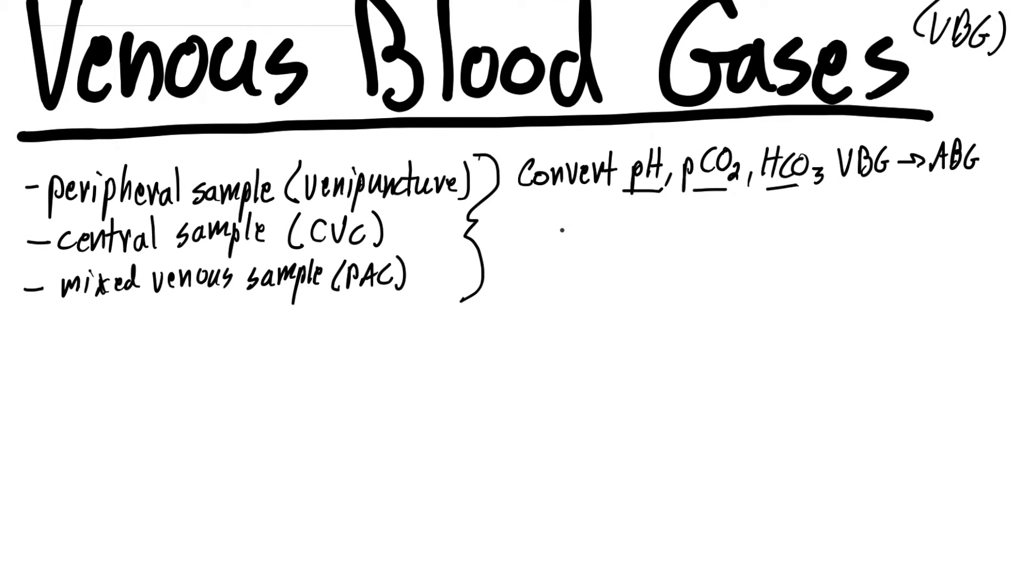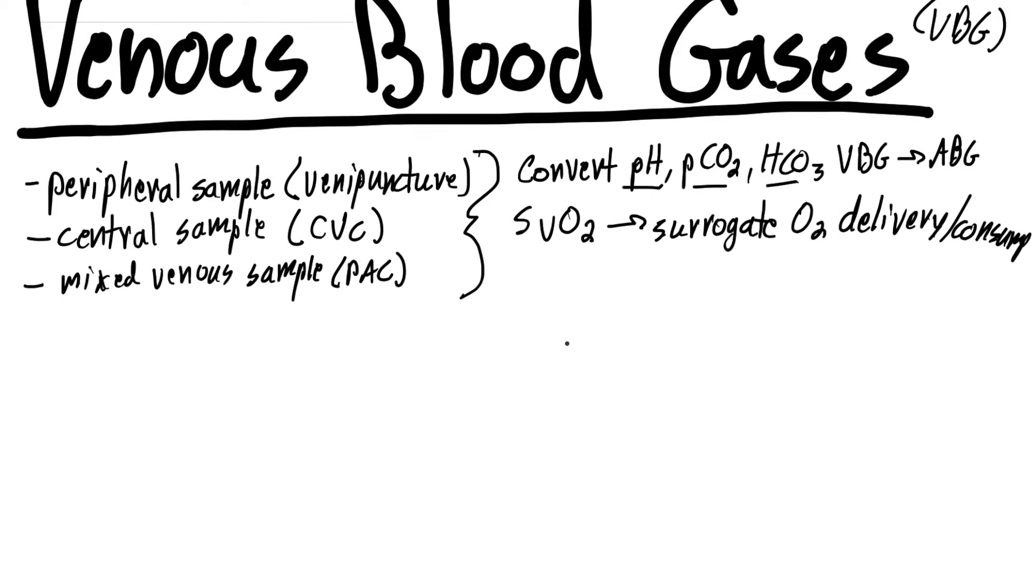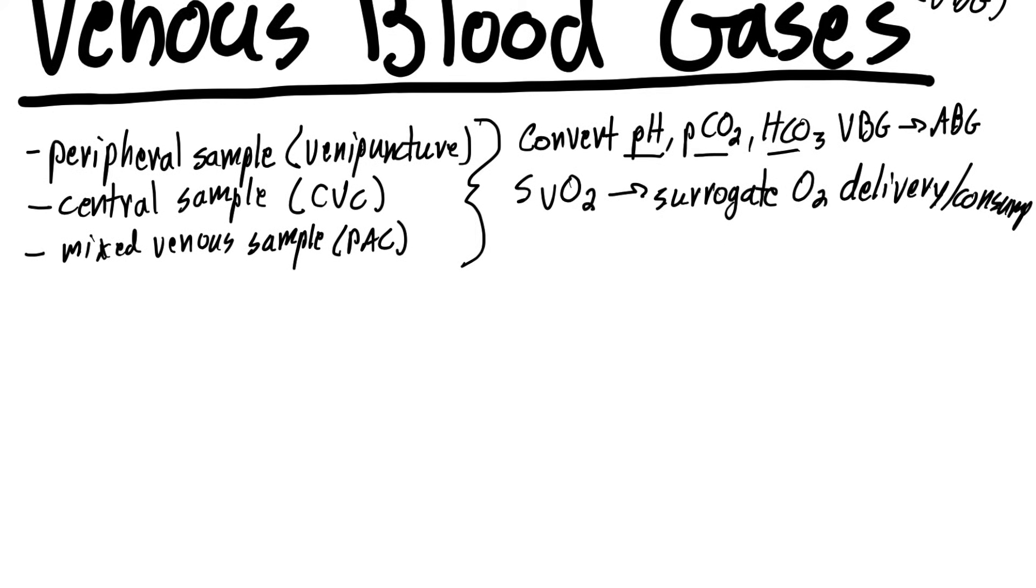The other reason is that the SVO2 on a VBG is a surrogate marker used for oxygen delivery and consumption, which we'll touch on, although not go into great detail in this lecture. So what does a venous blood gas actually measure? A venous blood gas measures the PVO2, the venous oxygen tension. The oxygen tension is actually the amount of oxygen dissolved in the bloodstream, not attached to hemoglobin, but the actual dissolved oxygen in the blood.